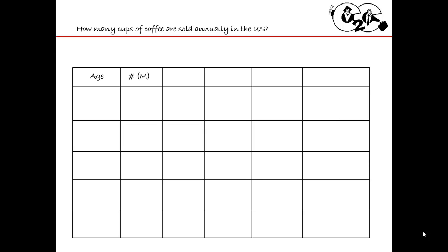Next I'm going to put in the total number of million people that each group represents out of the total population, and the percentage of them that even drink coffee, so what that total is. Now the question I asked is how many cups of coffee — not how many people drink coffee. So I need another variable, another factor to multiply by. Because it says how many cups of coffee, I need to know how many annual purchases of coffee are there for these people per year, and then I'll give the total per year.